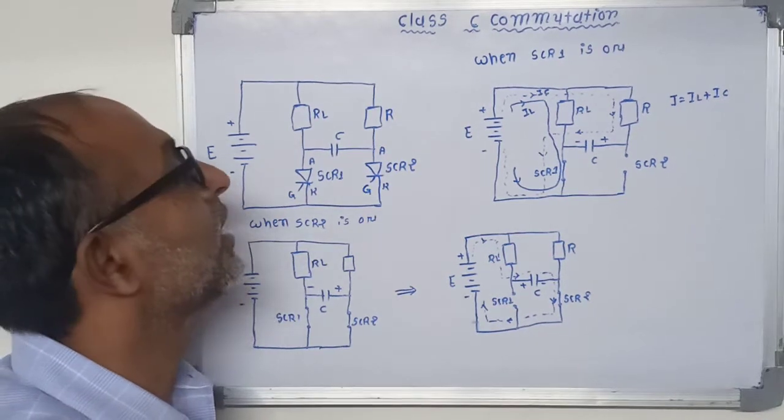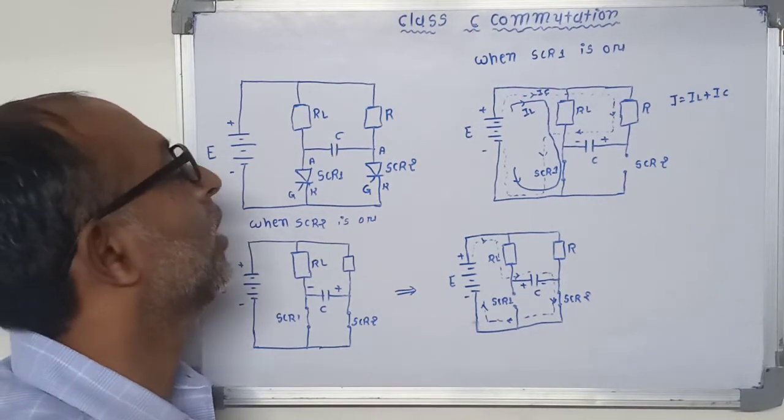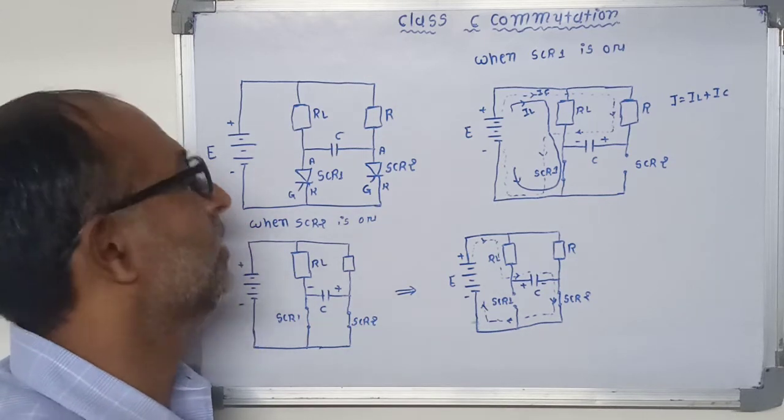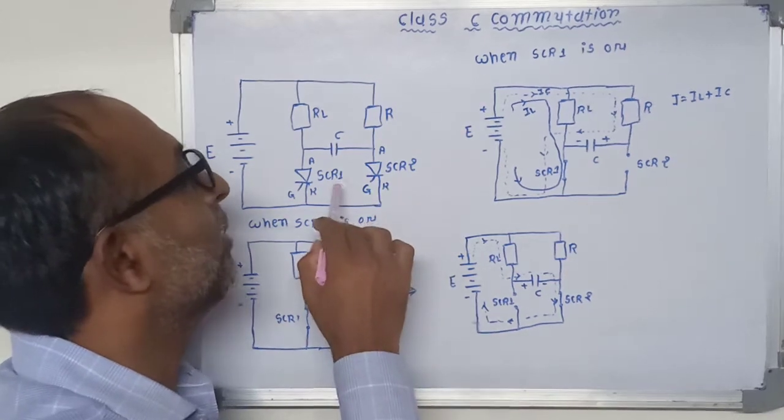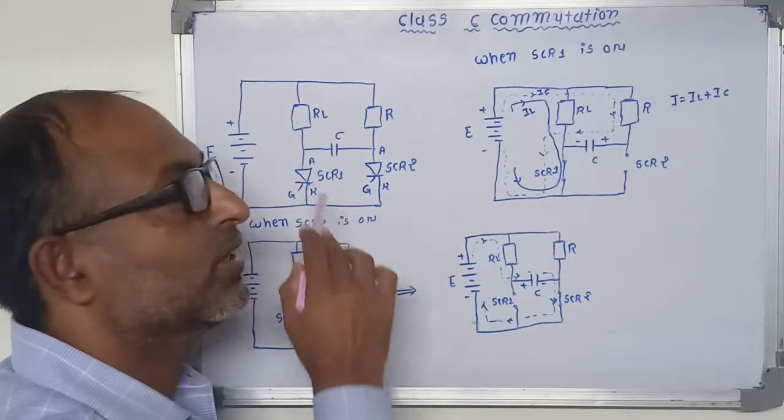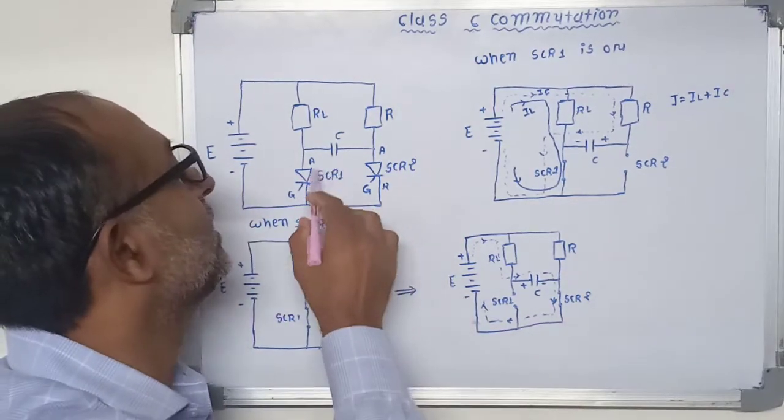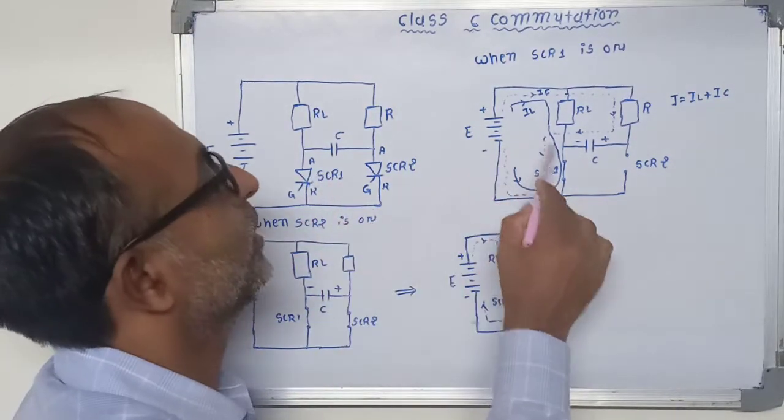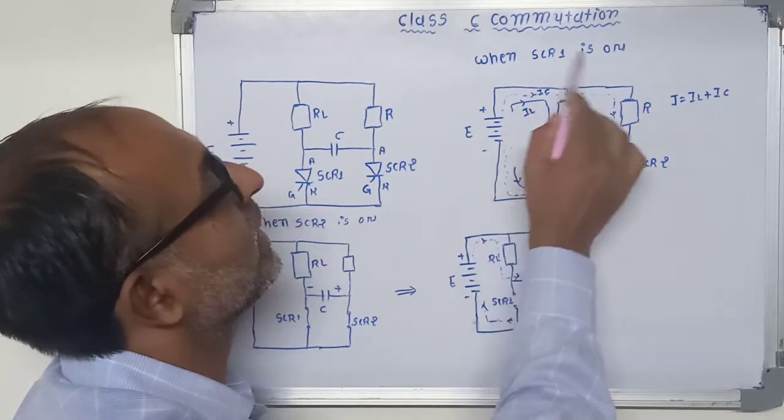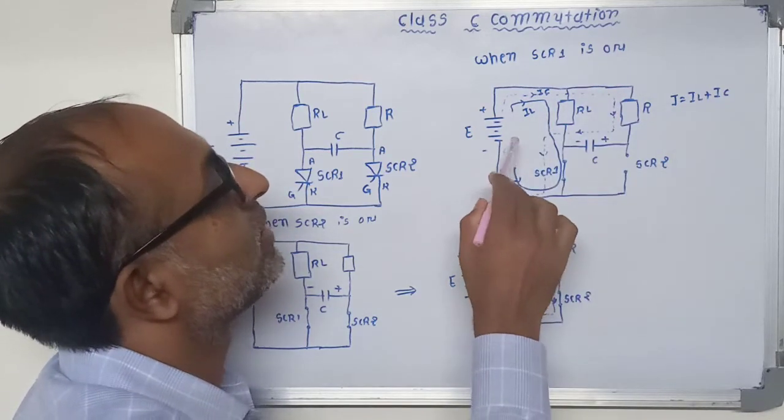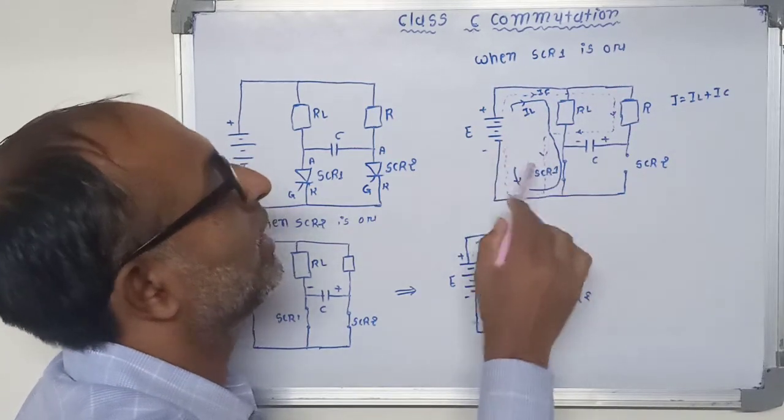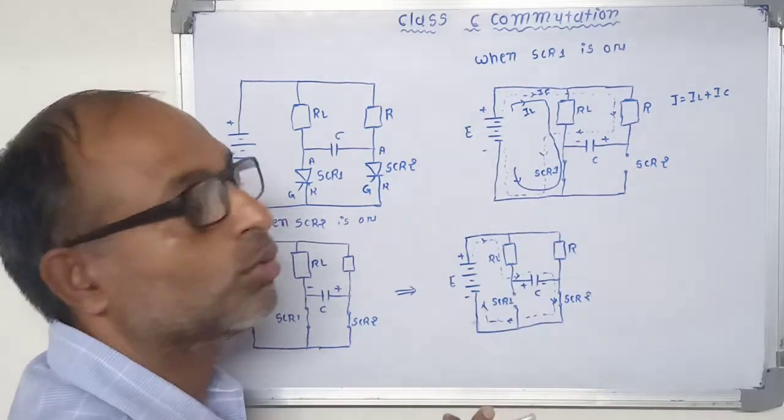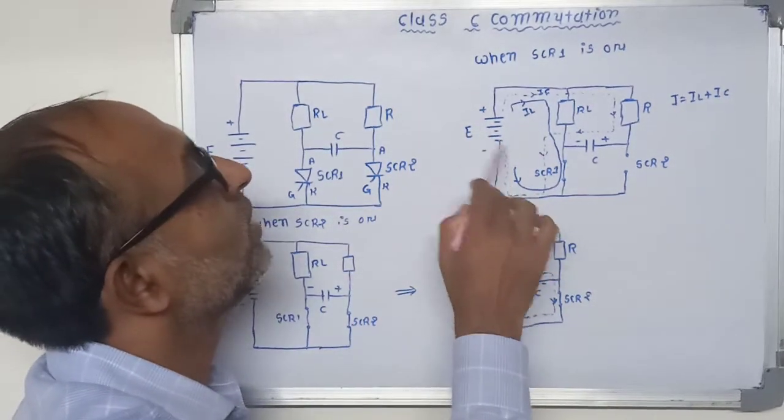Now let me see the working principle of this C type commutation. Now first we apply gate pulse to the SCR1 which turns on the SCR1. So now in this figure shows when SCR1 is on.